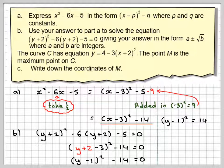Now we've got take away 14, so we add 14 to both sides. We get (y - 1)² = 14.